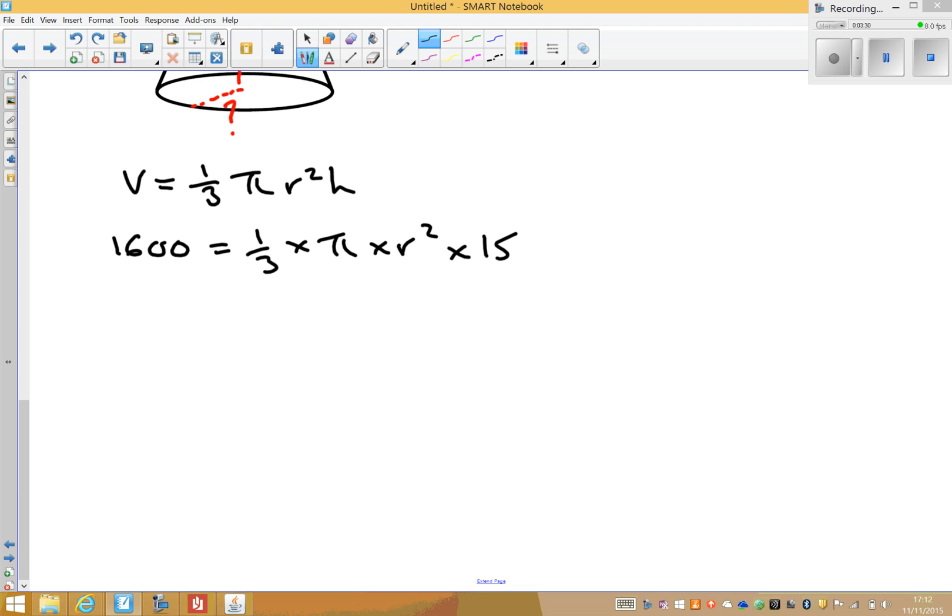We need to get the radius by itself. So the first thing to do is get rid of the third pi and the 15 that I've multiplied by. So on my calculator, I'll type in 1,600 divided by, brackets again, a third times pi times 15.